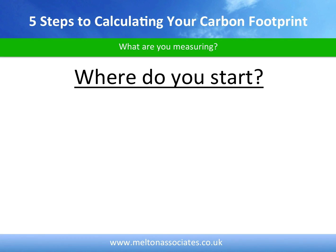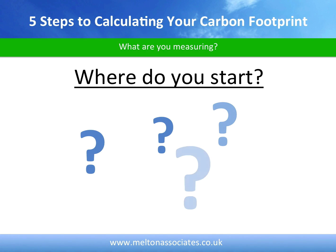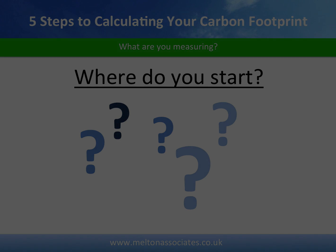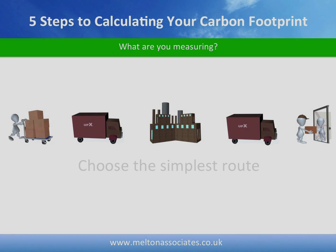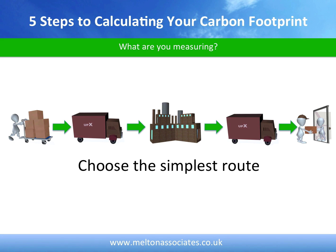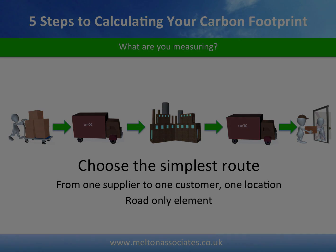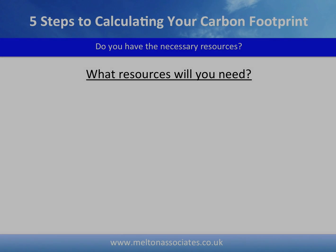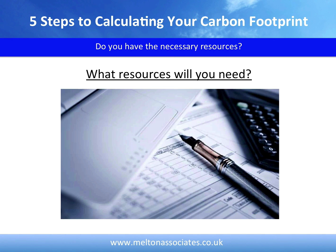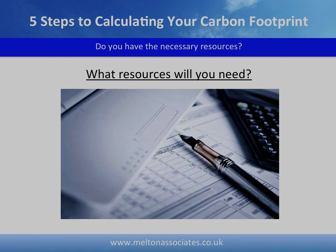We all know supply chains are complicated and can raise all sorts of questions. Do you use different suppliers, in different countries, with different modes of transport? Do you share some transport services with other businesses? And what about the reverse logistics? The answer is to start with the simplest route, such as from material supplier to your factory, and then to one of your customer's plants. Note that we're dealing here with the road element of the end-to-end logistics chain. Once you've decided which part of the supply chain you're measuring, you can't just let the calculation take care of the rest. You'll need to do some careful thinking, as the calculation will only be as good as the information fed in.